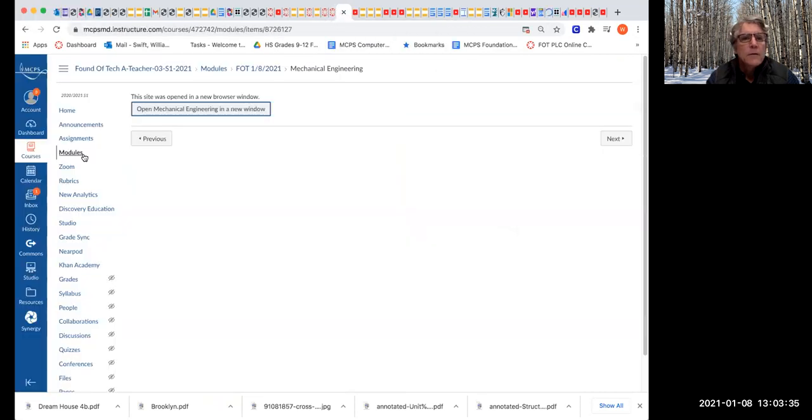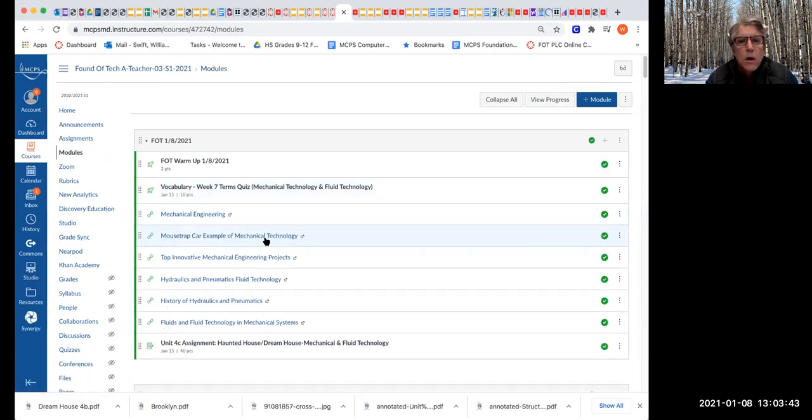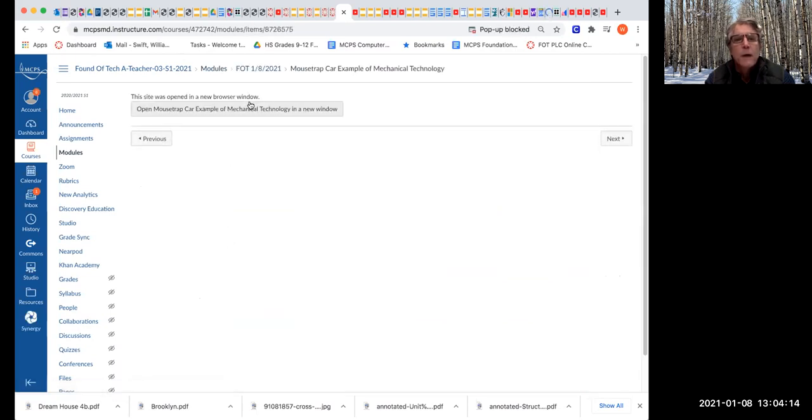Let's look at one more. I'll put this up to a vote. Do we want to watch the mousetrap car example or top innovative mechanical engineering projects? That's just going to show you a bunch of machines. The mousetrap car is pretty cool and it's something they actually do in the engineering class here at Blair. Whichever one is longer. Jeremiah, I've got a stack of these babies. We can go all day but I want to give you time to do these quizzes. I'm going to go with the mousetrap car. And then I'm going to ask you about it. Think about how does this car go forwards and backwards? What's happening here? They don't really show you but I'm going to ask you after this.